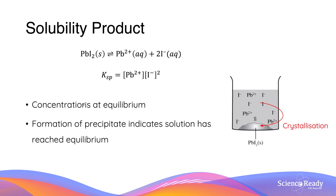The concentrations in the solubility product constant are concentrations of aqueous ions at equilibrium. When the reaction is at dynamic equilibrium, the rate at which the solid dissolves to produce ions equals the rate at which the dissolved ions recombine to form the precipitate. The reverse reaction through which the precipitate is produced is called crystallization or precipitation. Since crystallization occurs at equilibrium, the formation of precipitate is usually a good qualitative indicator of a dissolution reaction reaching equilibrium.